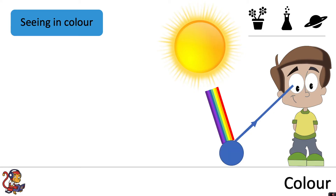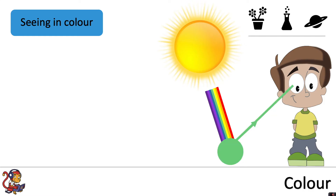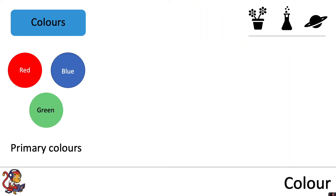Now let's look at a blue ball. White light hits the blue ball and the blue ball absorbs all colours of light except blue, which it reflects. And thinking of a green ball: white light hits the green ball and the green ball absorbs all colours of light except green, which it reflects. Red, blue and green are the primary colours of light.